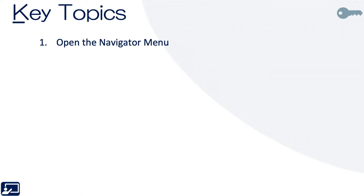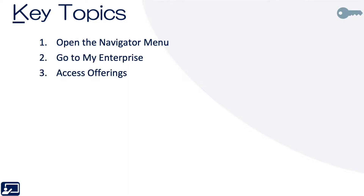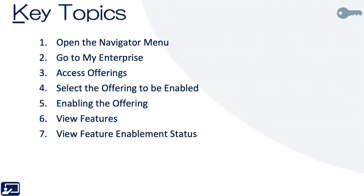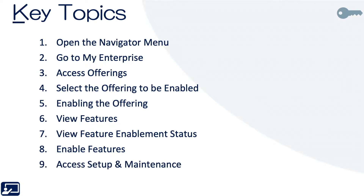Key topics for this lesson are as follows: open the navigation bar, go to My Enterprise, access offerings, select the offering to be enabled, enabling the offering, viewing features, view feature enablement status, enabling features, access setup and maintenance, and finally ensure offering and features are or have been enabled.